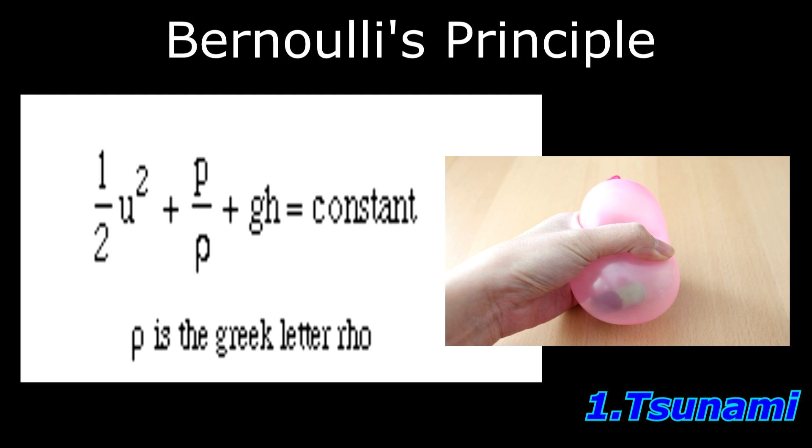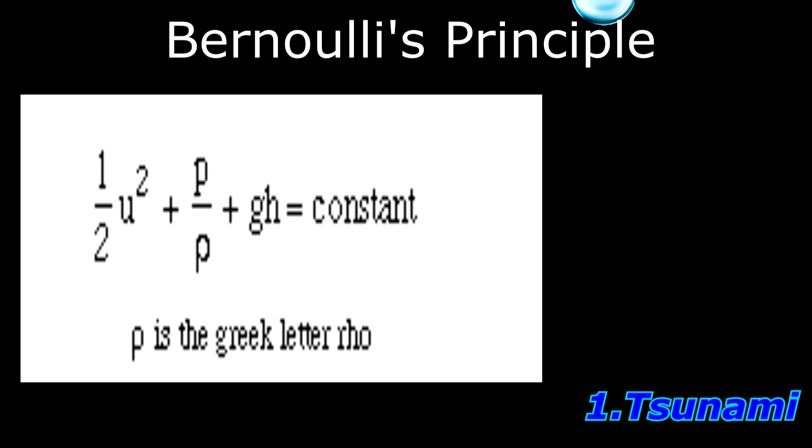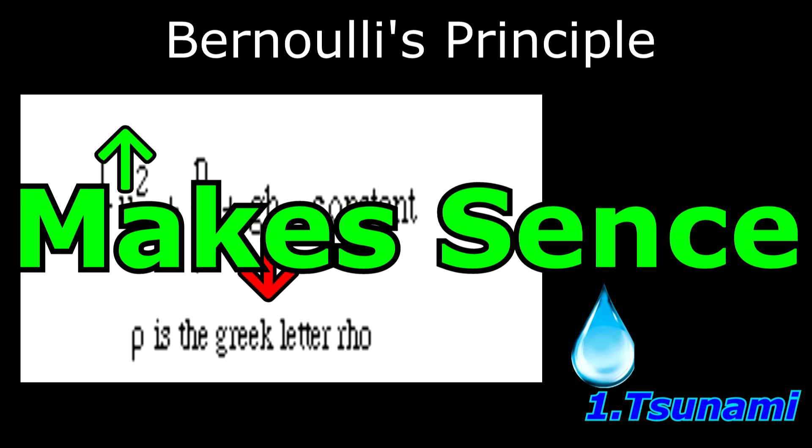If I squeeze a water balloon, the pressure p becomes high inside and low outside. The water is moving slowly inside and fast outside. As the water falls, the term gh is decreasing, hence the flow speed u is increasing to compensate. The equation makes sense.